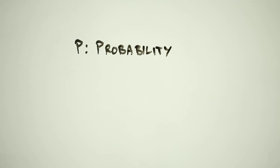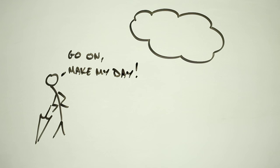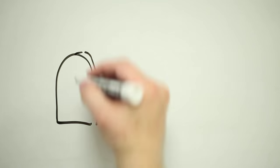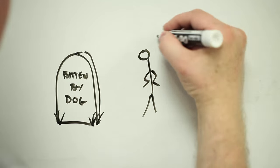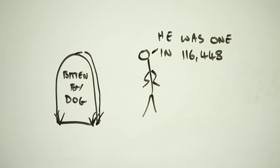First, P is for probability. Risk is all about the probability of something happening that you'd rather didn't. It involves phrases like there's a 50% chance of rain today, or you have a 1 in 100,000 chance of dying from being bitten or struck by a dog.